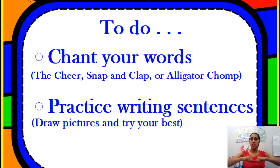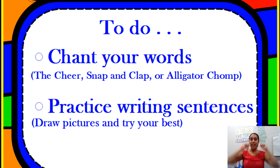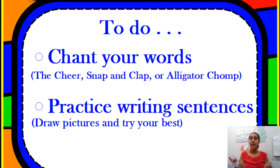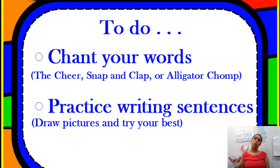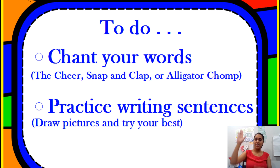For the cheer, you're going to take your arms up and roll them as you spell each word. Once you spell the word, you're going to shout it out loud. H-A-S, has. With snap and clap, you're going to snap your fingers to each letter, and once you complete the word, you're going to clap your hands while saying the word. H-A-S, clap. And then for the alligator chomp, you're going to pretend like you're an alligator and spell the word out loud, then chomp and say the word. H-A-S, has.